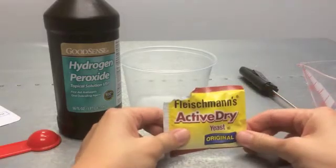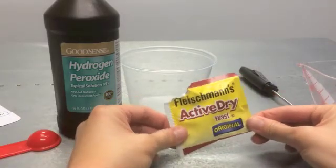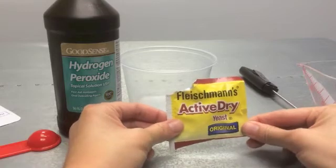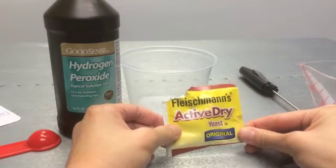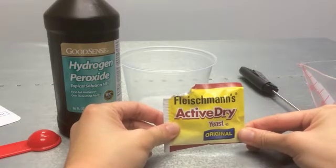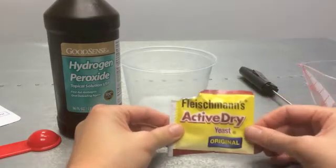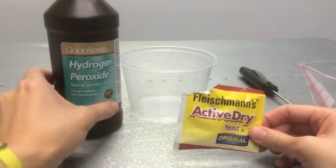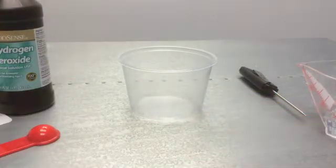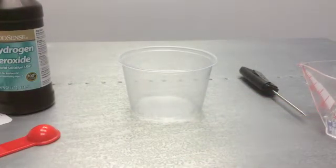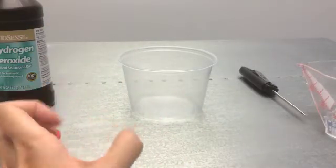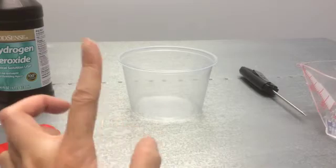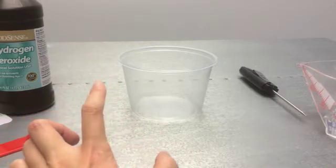Another thing you can ask is if anyone knows what active dry yeast is usually used for in cooking, and some of them will know that a lot of times it's used in baking, so it's what helps bread dough or pizza dough rise and get fluffy. The goal of today's lesson is not for students to actually understand what's happening in the chemical reaction. It's for them to be able to see the signs that a chemical reaction is taking place.